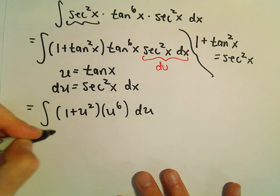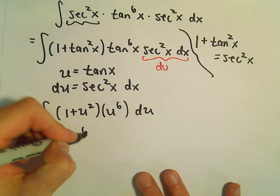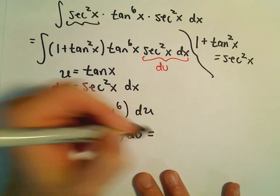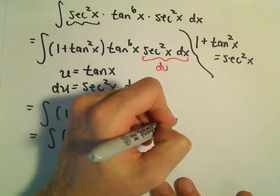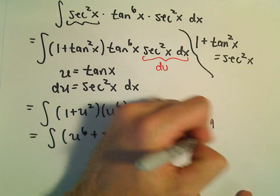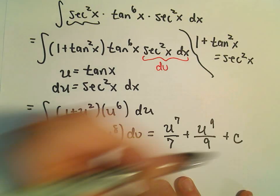And now I'm just going to distribute things out. So we'll have u to the sixth plus u to the eighth du. And when we integrate, we'll get u to the seventh over seven plus u to the ninth over nine plus c.